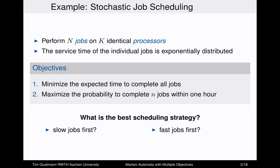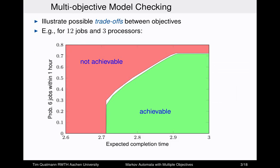We can show that for the first objective, the best thing to do is to schedule the statistically slowest jobs first. This avoids situations where just one very long job is left, which can only be executed on a single processor while others idle. But this is not good for the second objective — to maximize the probability of completing n jobs within one hour, it's best to do the fastest jobs first. So there is a trade-off.